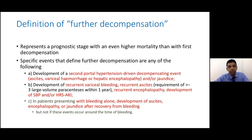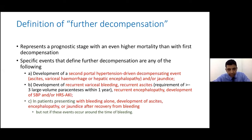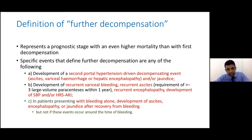One more concept: further decompensation. Further decompensation represents a prognostic stage with even higher mortality than first decompensation. It is defined as a second portal hypertension-related decompensating event — such as second ascites, variceal bleed, hepatic encephalopathy, or jaundice — or recurrent events. Also, if a patient came in with bleeding and then develops ascites or jaundice as the bleeding is improving, that is also further decompensation. These patients really need to be considered for liver transplant.